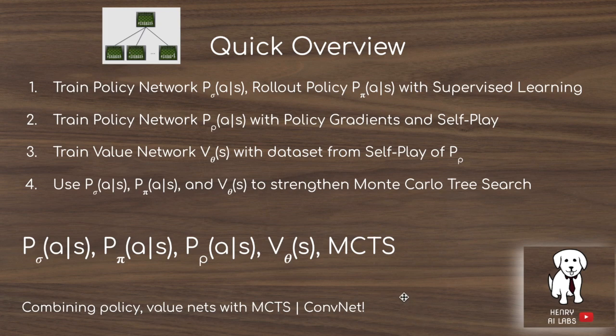AlphaGo uses a tree search known as Monte Carlo tree search. In many game-playing AIs, like Checkers, you can construct trees starting from the current board position, branching out with every possible action, continuing until you reach the end of the game. But in games like Chess and Go, the branching factor and the depth of the tree are too large, so you can't do an exhaustive search of all possible outcomes.